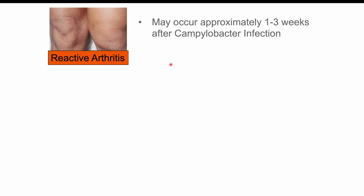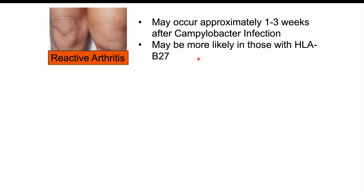Complications can include reactive arthritis, occurring approximately one to three weeks after Campylobacter infection. It's likely more common in those with HLA-B27, which is more common in patients with psoriatic arthritis and ankylosing spondylitis. Reactive arthritis is an asymmetric arthritis — typically one-sided, often in the knees. In some cases there is a triad of conjunctivitis, urethritis, and arthritis — remembered by: can't see, can't pee, can't bend my knee.